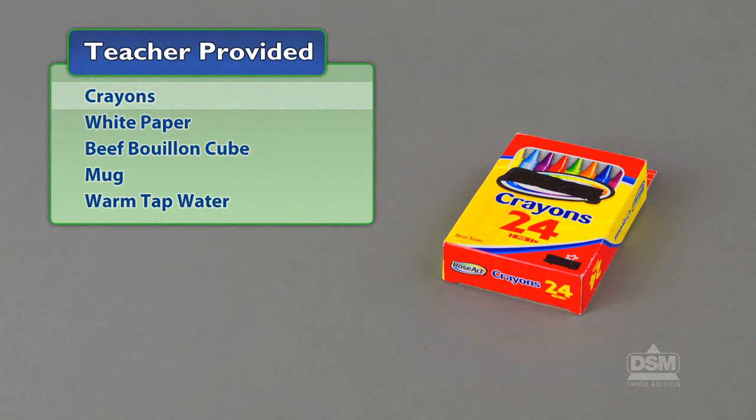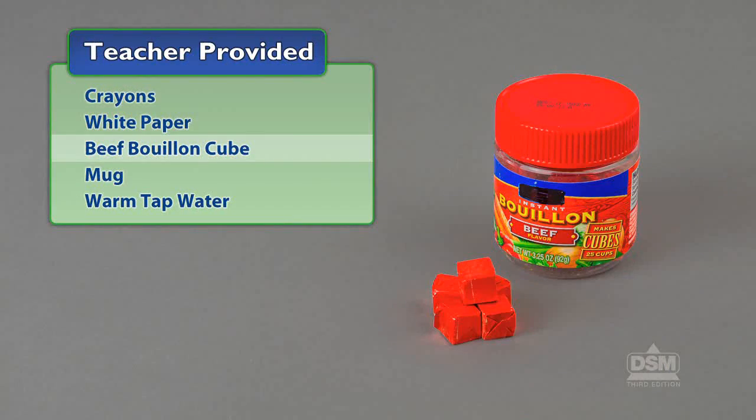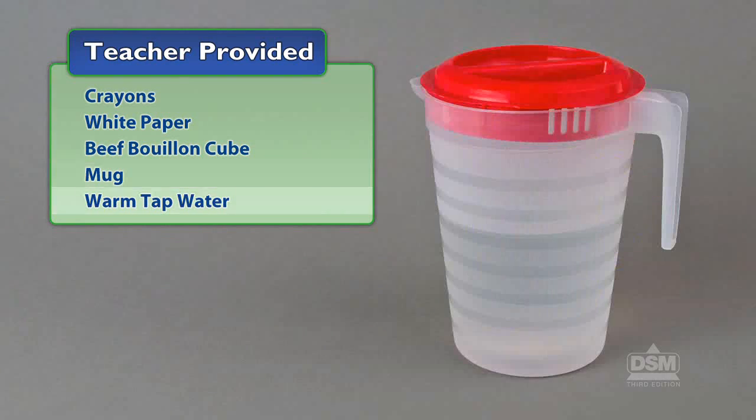You will also need to provide crayons, white paper, beef bouillon cube, a mug, and warm tap water.